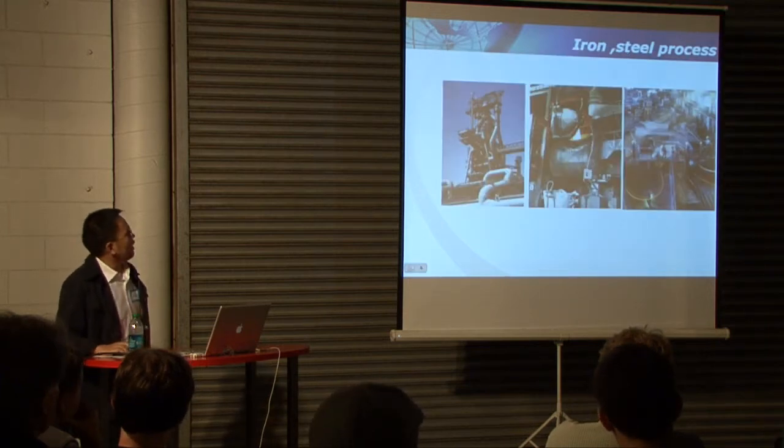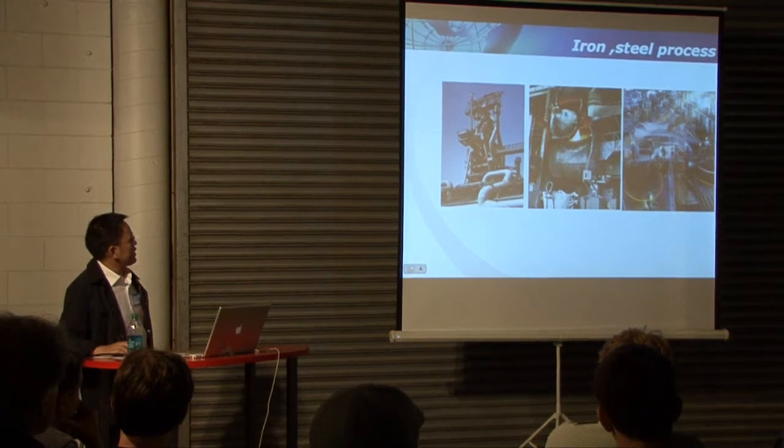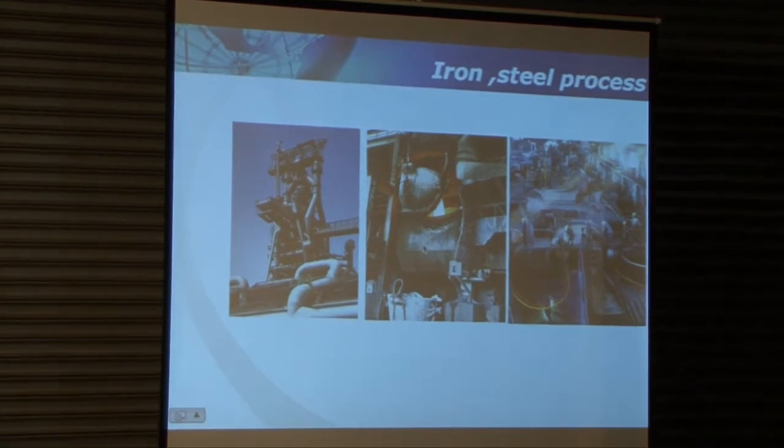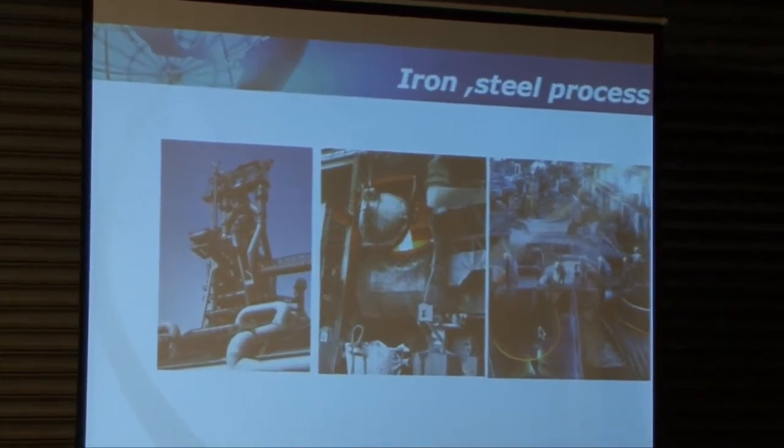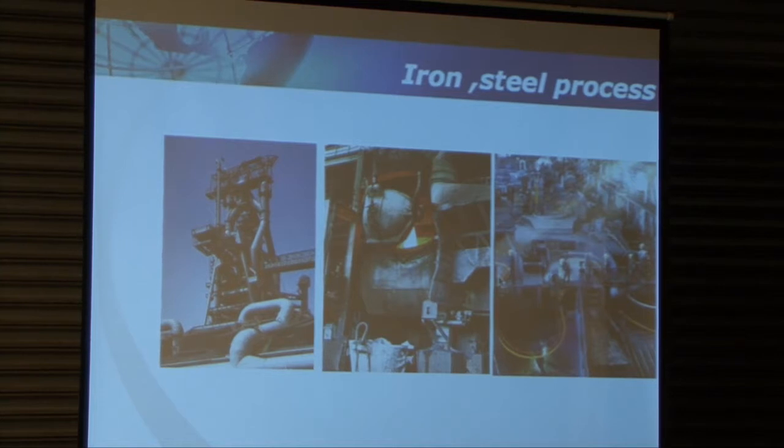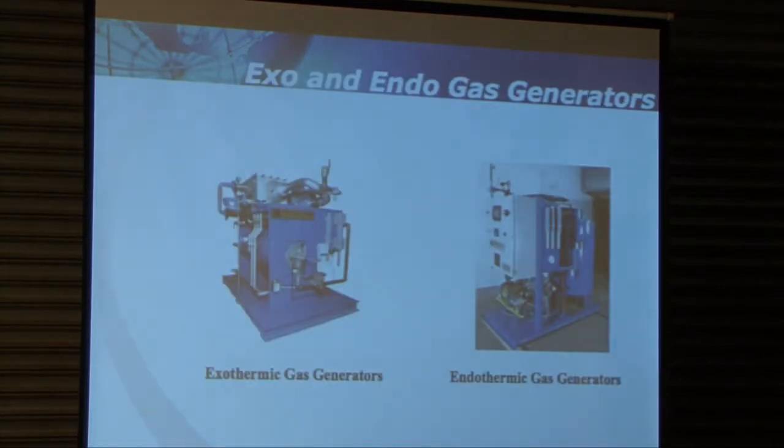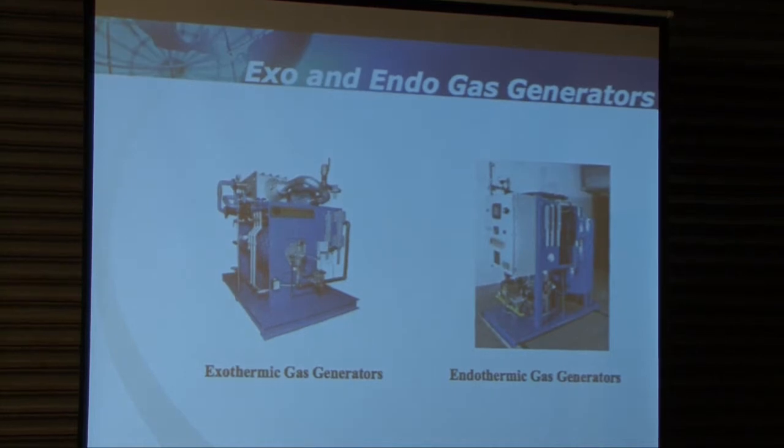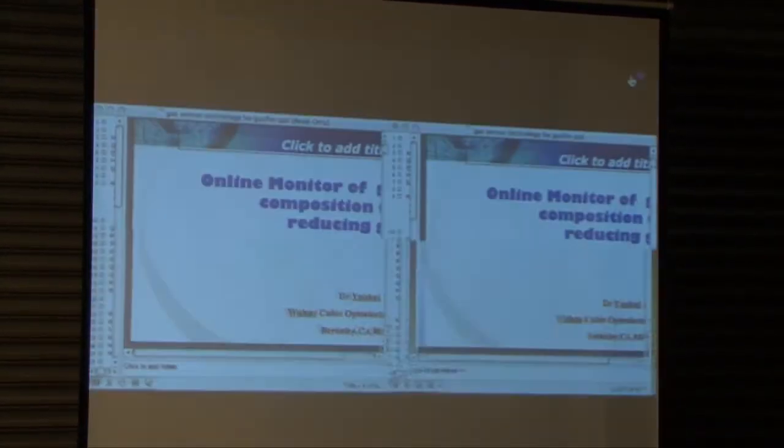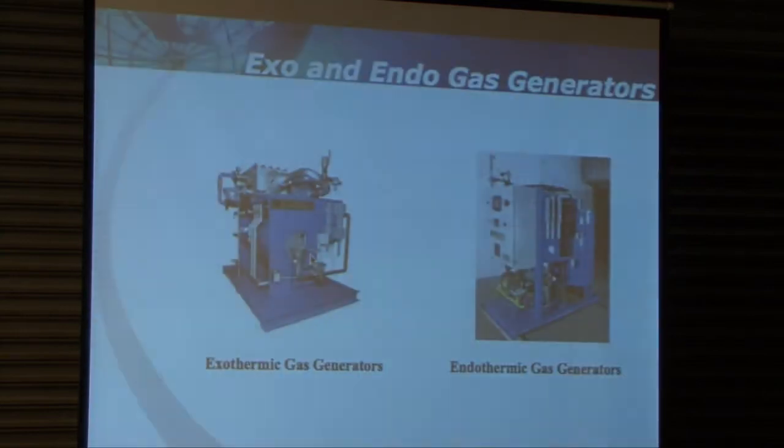Another one, reducing gas is from the iron steel process, such as the blast furnace, the converter, and other iron steel processes. The gas is also CO, CO2, CH4, H2, O2, and so on. The fourth one, reducing gas, is a gas generator. This kind of machine is used for furnace heat treating.